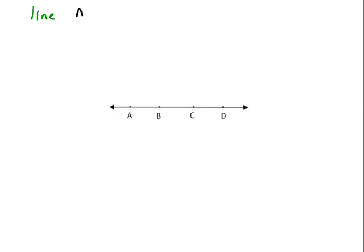We could call that line AD, and the symbol for a line, you take the letters that are on the line and you put a line symbol above it. But since any two points determine the line, you could also call that line BC. We could also call that line AC, and there are other options, but those are the three that I am going to talk about.